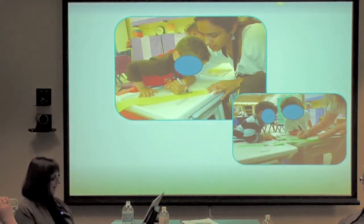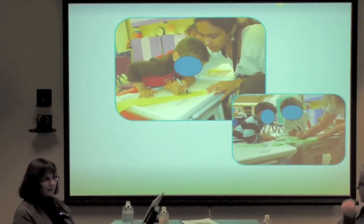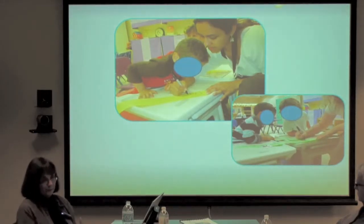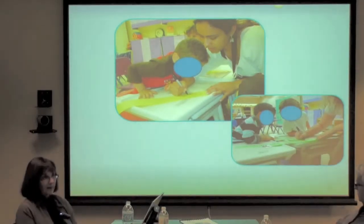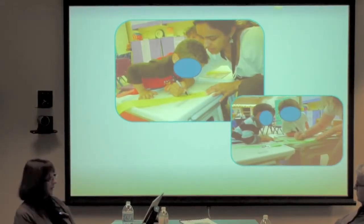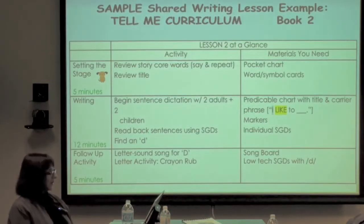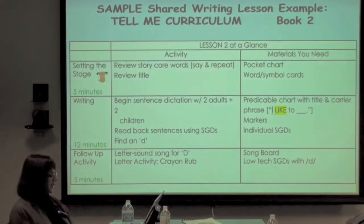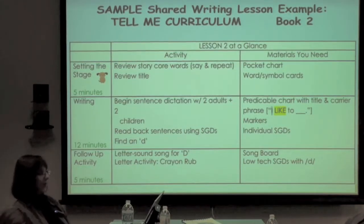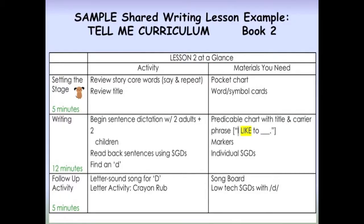You can kind of see through the body language of these little kids that they are really paying attention. And these are kids that, for all intents and purposes, are nonverbal — nobody would have thought of exposing them to reading and writing. This is just a snippet to show that the same level of predictability that we had in the shared reading we duplicated in shared writing. So we had something that happened before we do our writing, then we do the writing, and then something that happens afterwards.